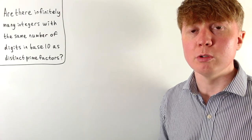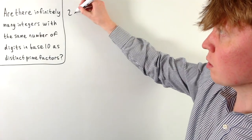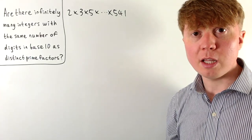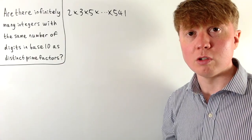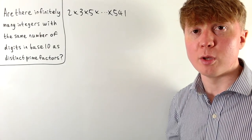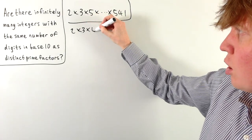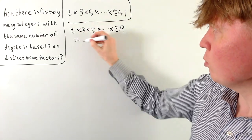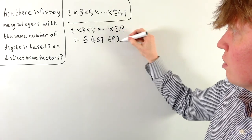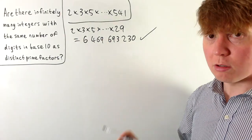Even if we try to make the number as small as possible by using the smallest possible prime factors, if we take the product of the first hundred primes — up to the hundredth prime, which is 541 — multiplying all hundred together gives something with far more than a hundred digits. Let's hone in: taking the product of the first ten primes, up to the tenth prime 29, we get 6,469,693,230 — exactly ten digits and exactly ten distinct prime factors. So we can definitely do this up to ten digits.